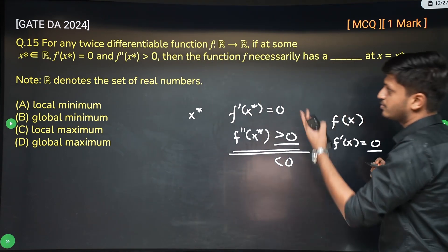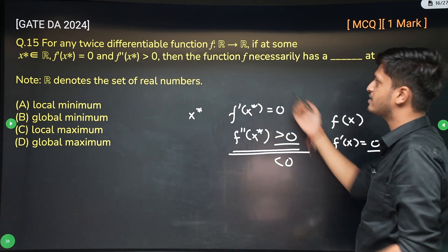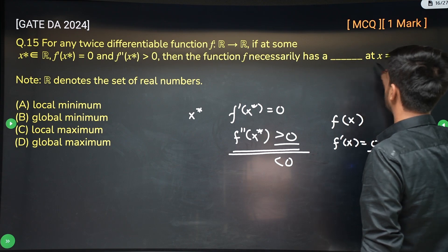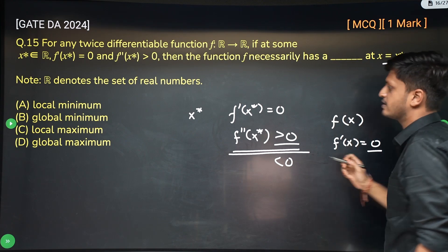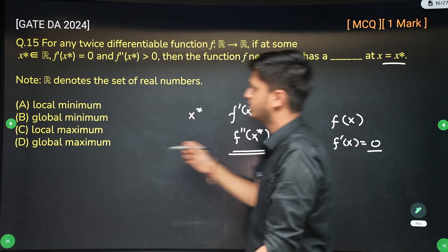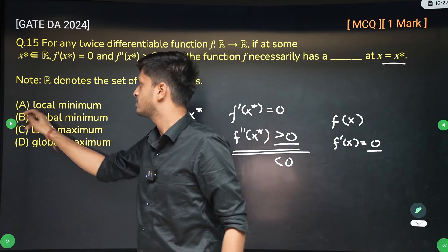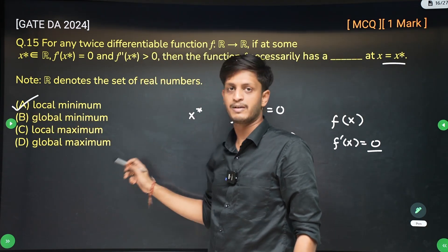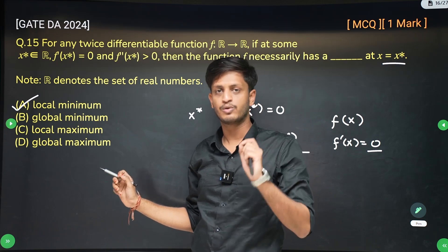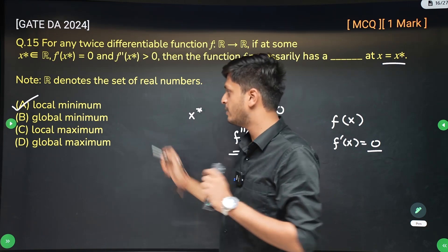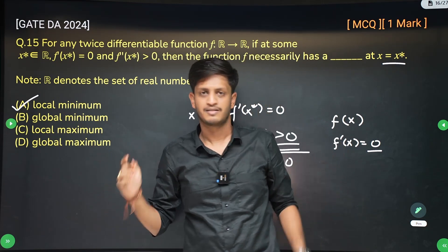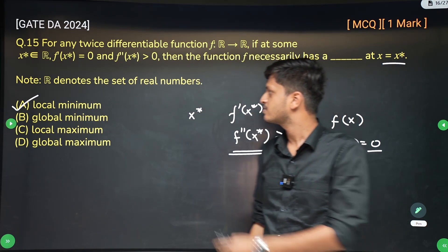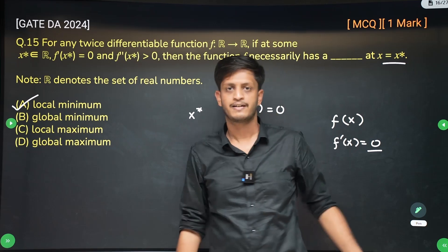So by definition, this function f necessarily has a local minima at x equal to x star. You cannot say it is global minima or global maxima — it is only local. For global, you will have to check the values at all x star. This is by definition. So option A is correct.